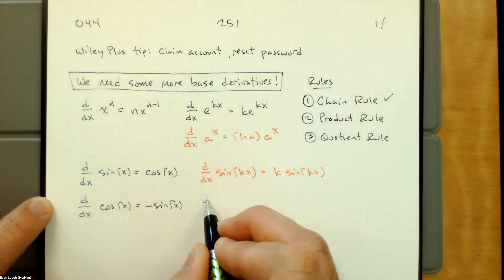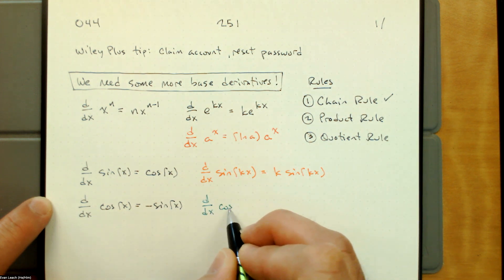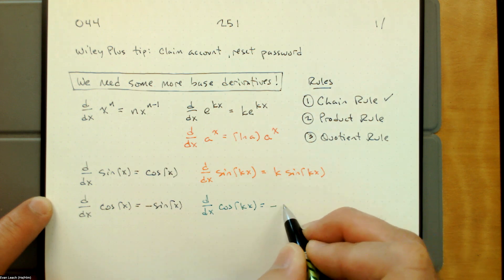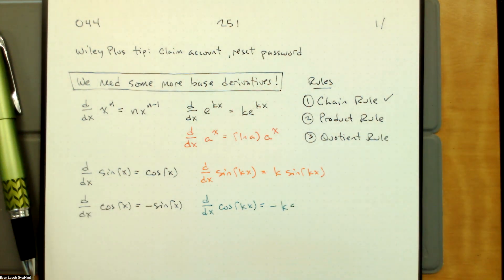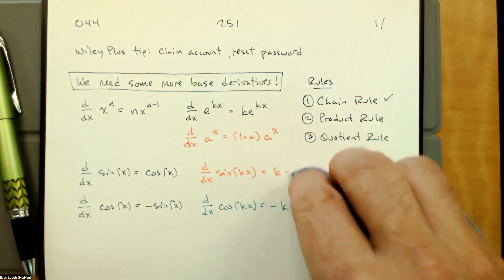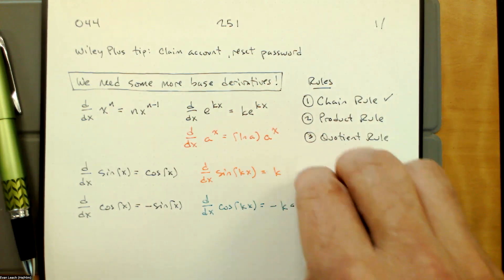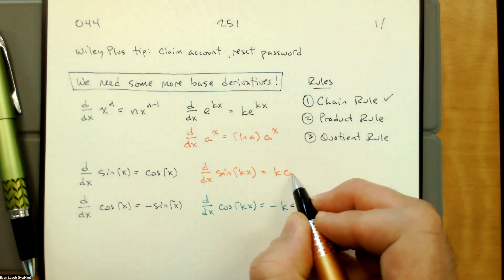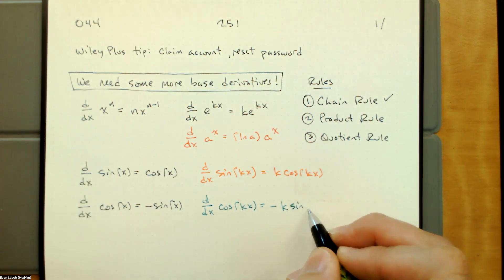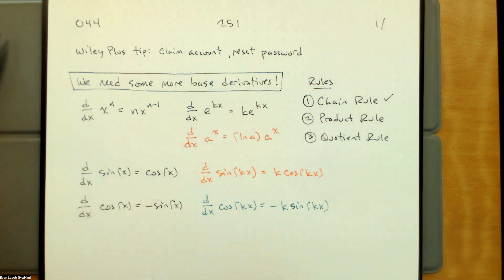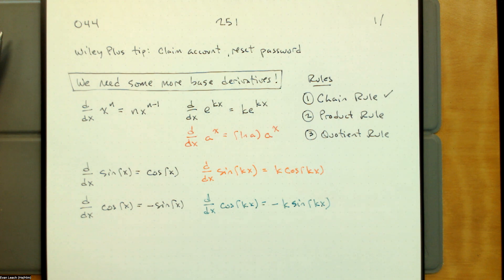So the derivative of sine of kx is k times cosine of kx. The derivative with respect to x of cosine of k times x is negative k times sine of kx. The derivative of sine is cosine, the derivative of cosine is negative sine — you don't have to memorize these, you just have to remember them starting now and forever.